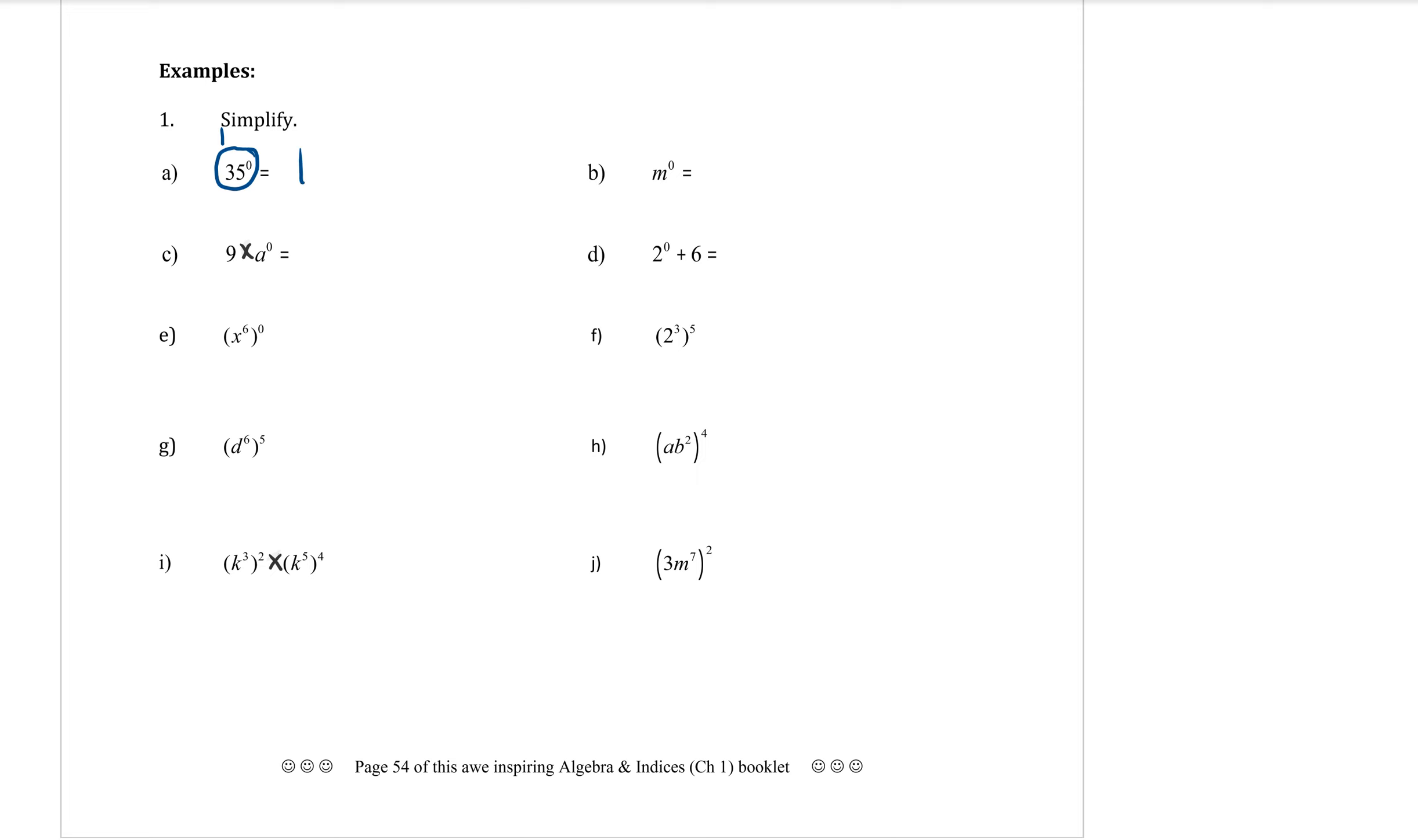Everything there was to the power of zero. So that whole thing is going to be equal to one. But often there's still some other things around there that you're still going to have to work with. So you need to be a little bit careful. In part B, M is to the power of zero. So all of that's going to be equal to one. So that is also just going to equal one.